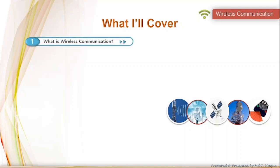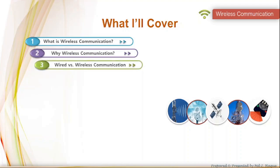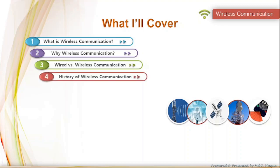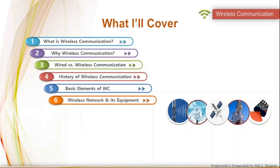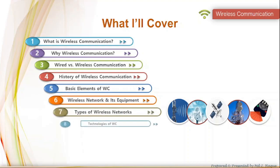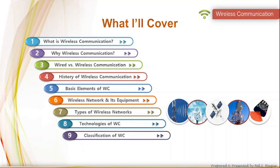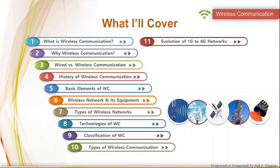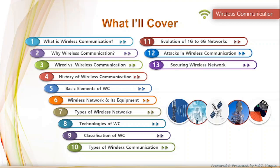These are: what is wireless communication, its importance, some basic differences between wired and wireless communication, history, basic elements, wireless network and equipment, along with types of wireless networks, technologies, classifications and types of wireless communication, the evolution of first generation to sixth generation networks, attacks, securing methods, and some advantages and disadvantages of wireless communication.